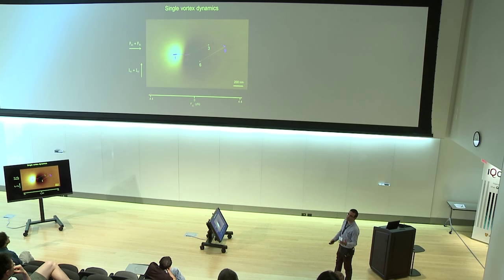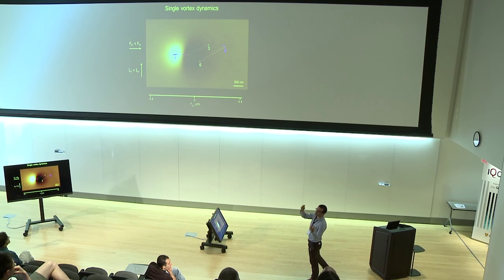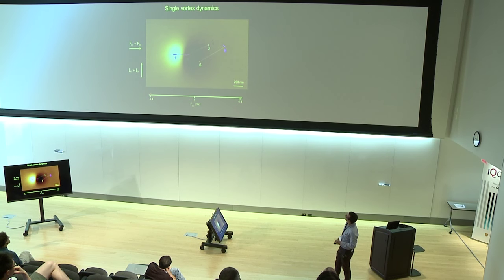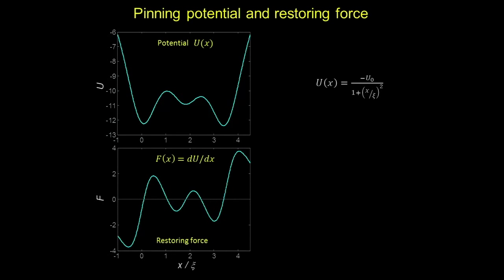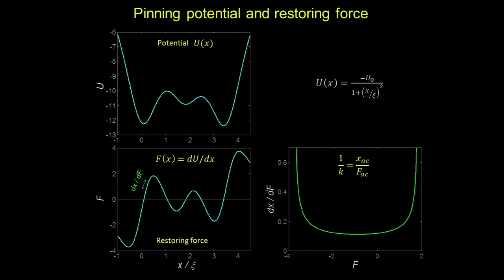Also pay attention to these jumps between wells — they're quite long, tens of coherence lengths. As soon as the vortex jumps out of a well, it goes instantaneously to another well. Basically what we're doing is this: this is the potential landscape I made out of three Lorentzian wells centered at three different points, and if you take the derivative you have the restoring force. What we measure is one over the slope — or one over the spring constant.